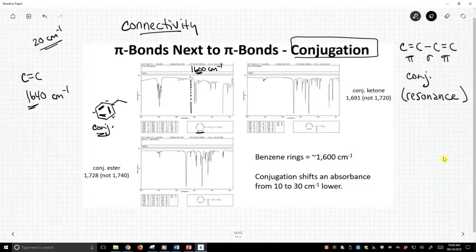But benzene rings tend to show up around 1600, and that's the carbon-carbon double bond. But you might say, carbon-carbon double bonds show up at 1640, not when there's a lot of conjugation around. So that's one example of conjugation.